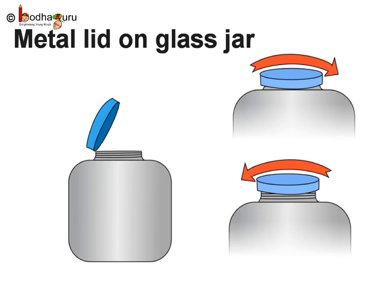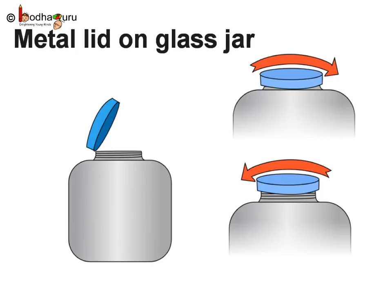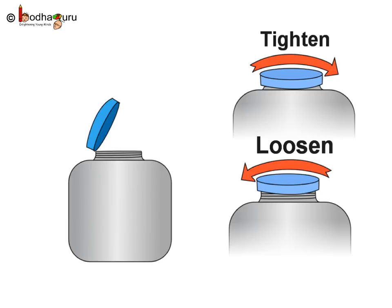The metal or plastic lid on a glass jar is nothing more than a wide screw. The lid has a raised edge that forms a screw shape, and the metal lid has a matching thread on the inside. Turn the lid one way and it comes off the jar; turn it the other way and it tightens onto the jar.